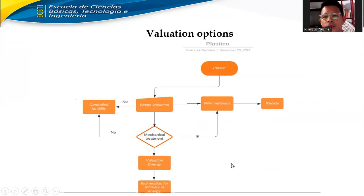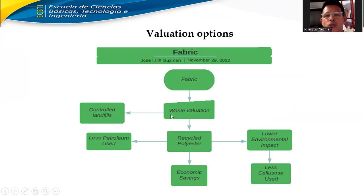For fabric: wash, volution, controlled landfill, recycled polyester, less petroleum usage. This is unutilized, with lower environmental impact and less resource usage.